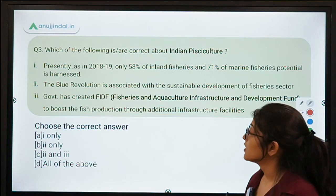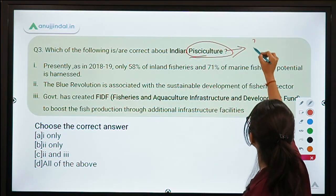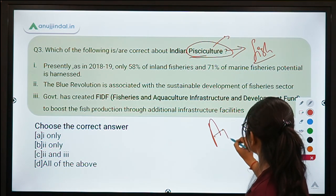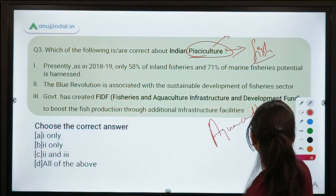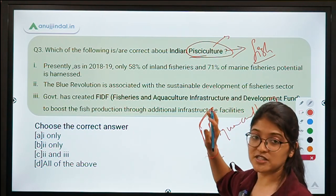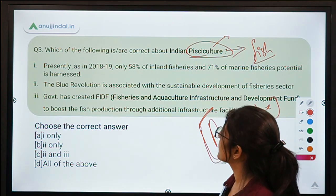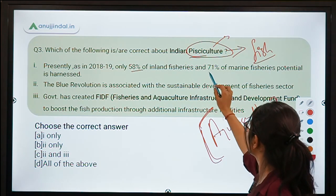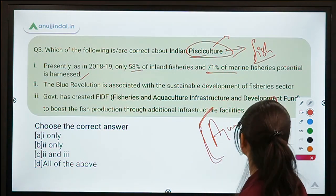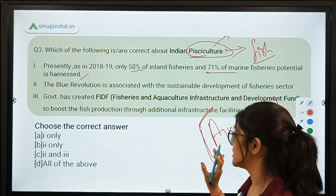This is the third question: which of the following is or are correct about Indian pisciculture? Pisciculture is specifically about fish farming. The difference from aquaculture is that aquaculture covers crustaceans, mollusks, and fishes, while pisciculture is specifically focused on fish farming. The first statement says, as of 2018-19, only 58% of inland fisheries and 71% of marine fisheries potential is harnessed — so there is a lot of untapped potential in the fishing sector in India. This statement is correct.